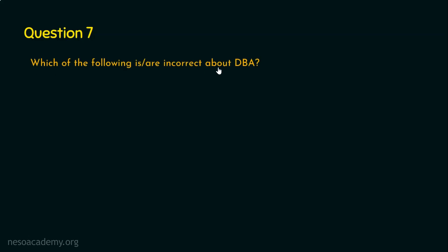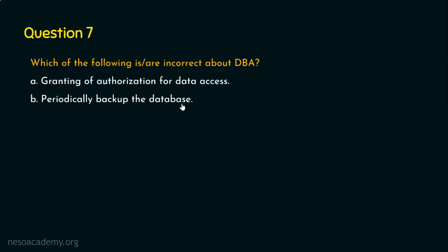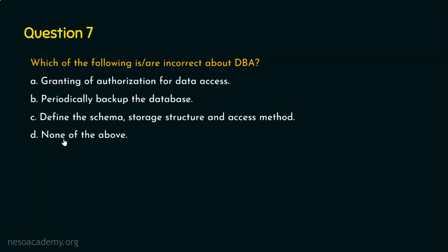Let's now move on to question number seven: which of the following is or are incorrect about DBA, the database administrator? Option A: DBA is responsible for granting authorization for data access. Option B: DBA periodically backs up the database. Option C: DBA defines the schema, storage structure and the access method. And option D: none of the above. The right answer is option D, none of the above, because all the jobs mentioned — options A, B, and C — are all the responsibilities of the database administrator. So DBA grants authorization for data access, periodically backs up the database, and defines the schema, storage structure, and the access method.